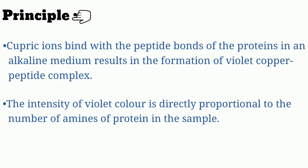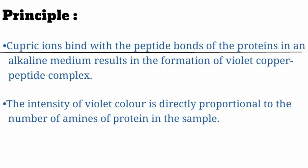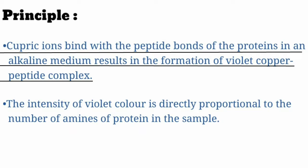Principle of the Biuret method: cupric ions bind with the peptide bonds of the proteins in an alkaline medium, resulting in the formation of a violet copper peptide complex. The principle is very simple — cupric ions bind to the protein's peptide bonds under alkaline medium conditions, and a violet copper peptide complex is formed.